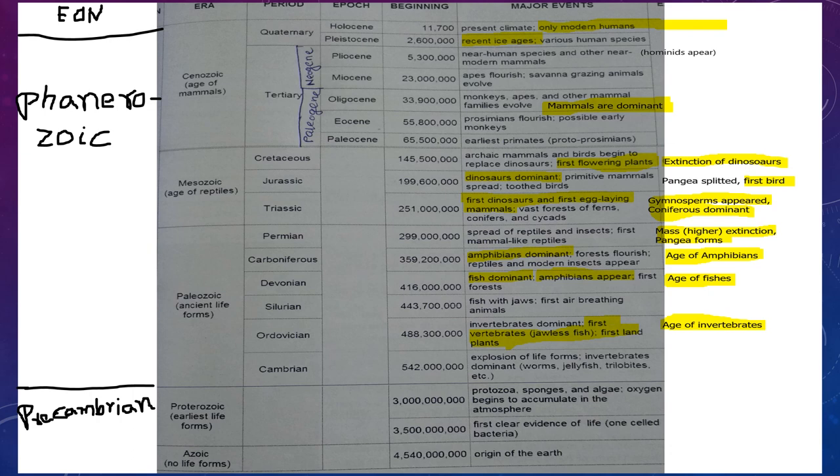Next is Silurian. In Silurian, fish with jaws and first air-breathing animals appeared.